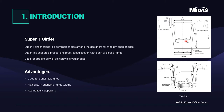The Super T girder section is shown in this figure. This Super T bridge is a common choice among designers for medium spans ranging from 18 to 35 meters. The Super T section is a precast pre-stressed section with open or closed flanges. These girders can be used for straight as well as highly skewed bridges. Main advantages include good torsional resistance, adjustable flange width, and aesthetic appeal, making Super T girders a common choice for medium span bridges.